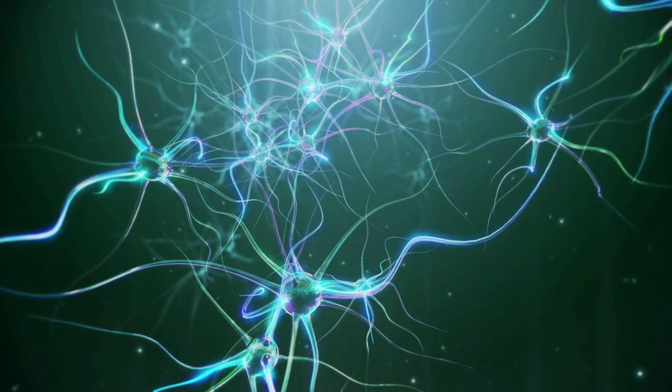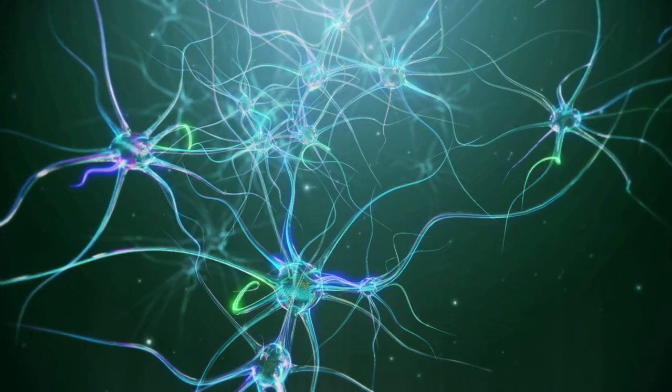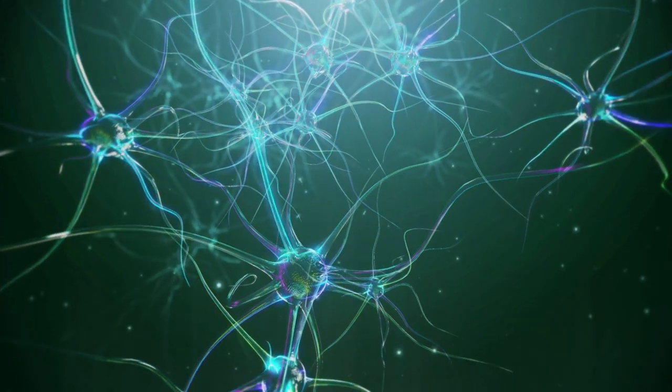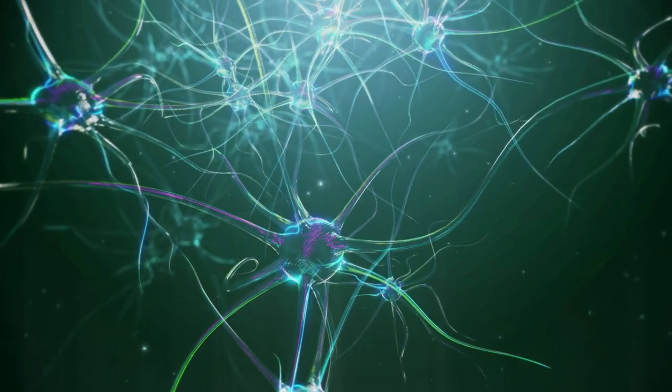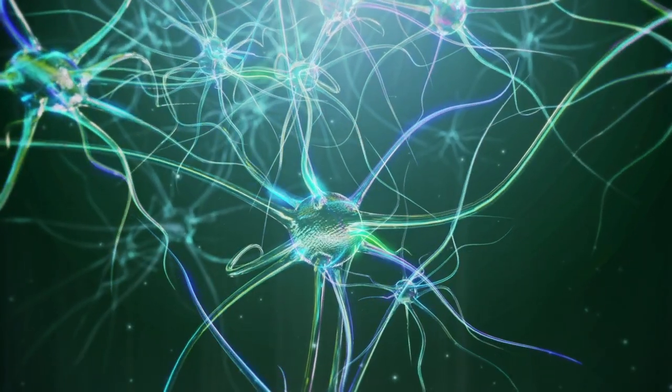There are almost 90 billion neurons in the brain. Each, on average, has 7,000 connections with other neurons.